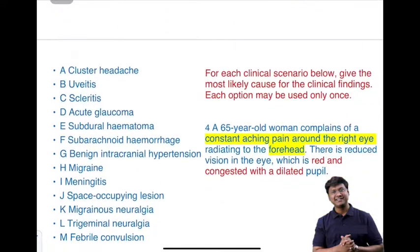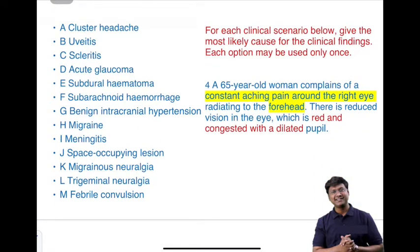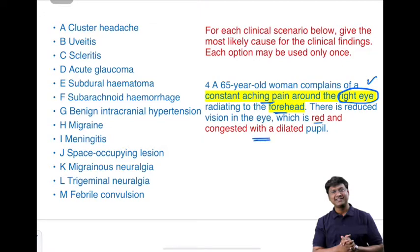The fourth clinical scenario is a 65-year-old woman complaining of constant aching pain around the right eye radiating to the forehead, with reduced vision. The eye is red and congested with a dilated pupil. This is the classical description of acute glaucoma.